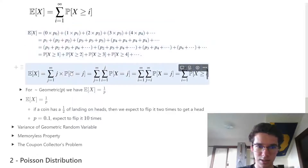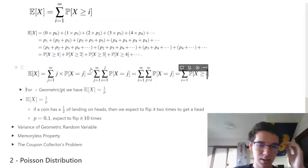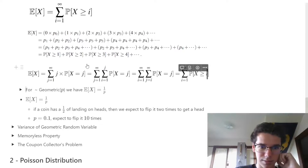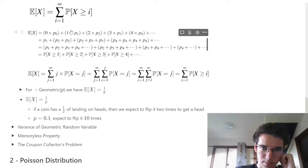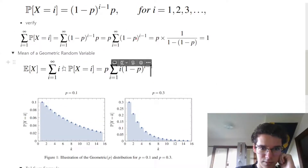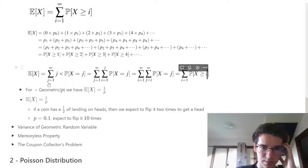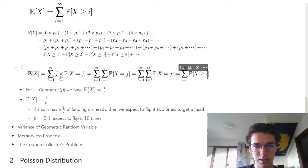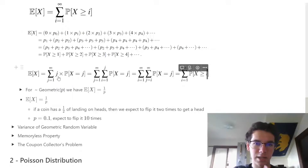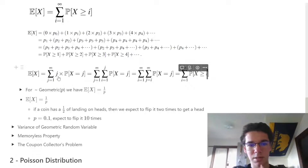This says the exact same thing in mathematical notation. The expected value is defined as a sum from some index j to infinity, where j is some value that the random variable can take on, multiplied by the probability that the random variable takes that value.